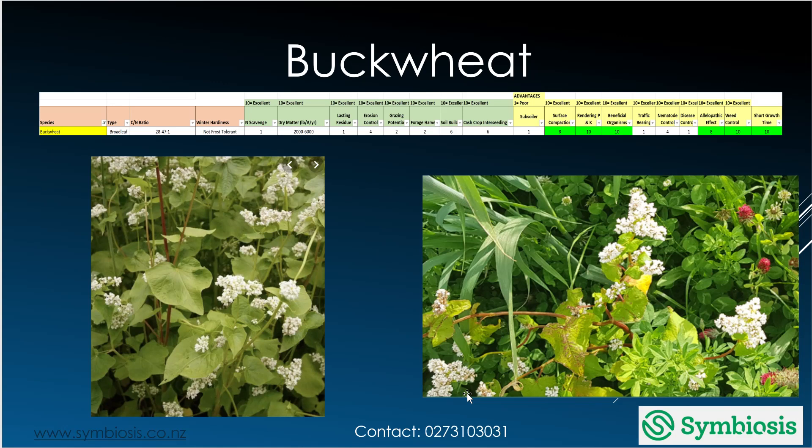Buckwheat is pretty good at dealing with surface compaction and very good at rendering phosphorus and potassium to assist plants. It's also very good for beneficial organisms — it's a big attractor of bees and the like.